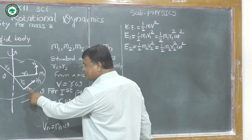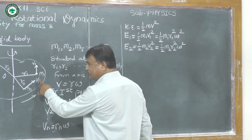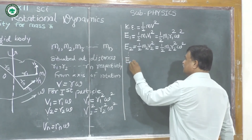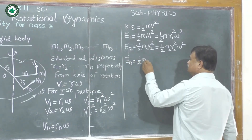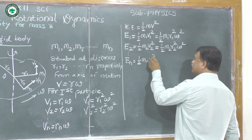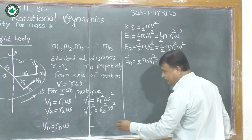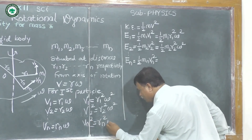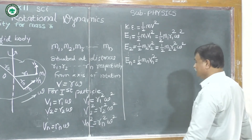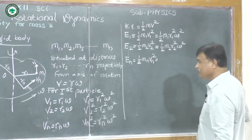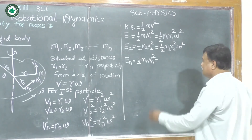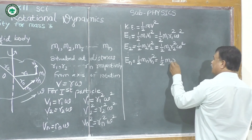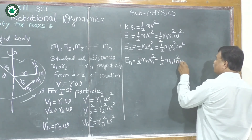For the last particle of mass mn with velocity vn: En = ½ mn vn². Since vn = rn·omega, vn² = rn²·omega², so En = ½ mn rn² omega².